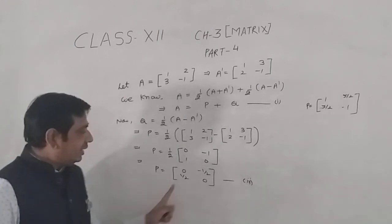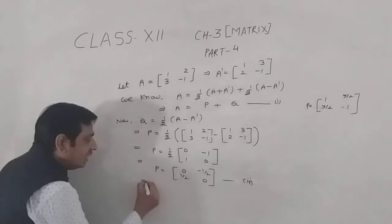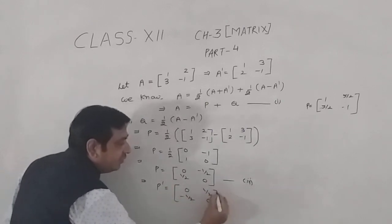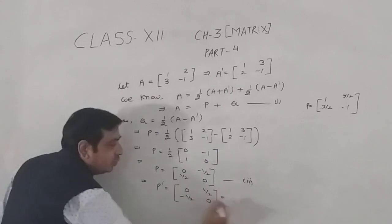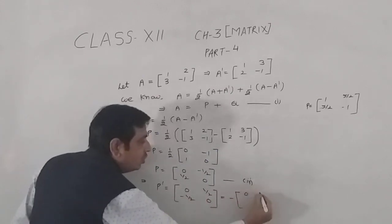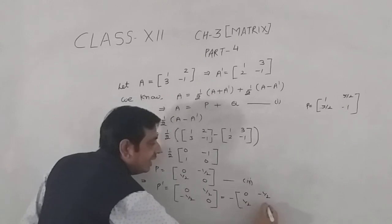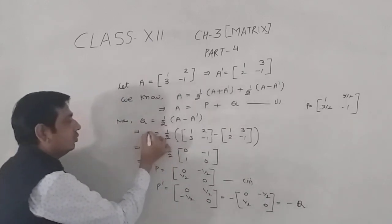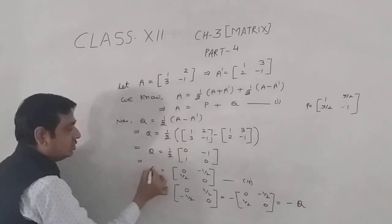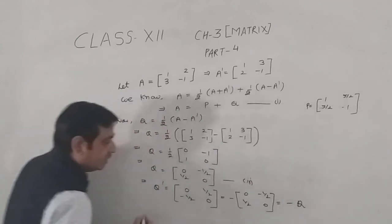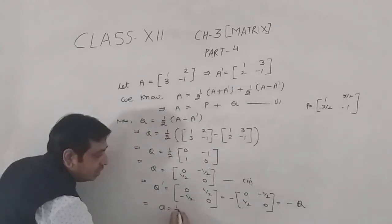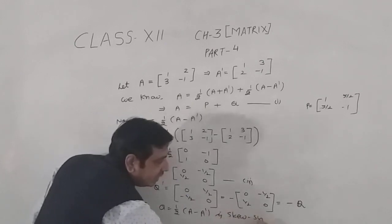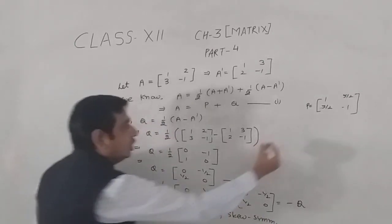Now check whether Q is skew symmetric. Take the transpose of Q: you get [0, -1/2; 1/2, 0]. Taking minus common gives [0, 1/2; -1/2, 0], which is minus Q. So Q' equals minus Q, confirming that Q equals half(A minus A') is a skew symmetric matrix.